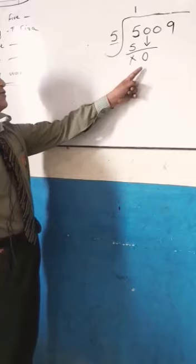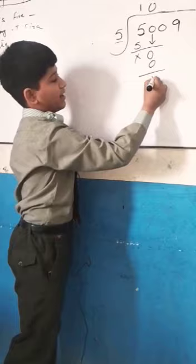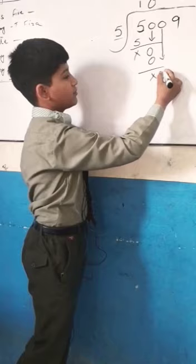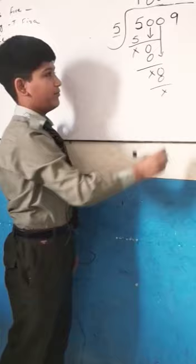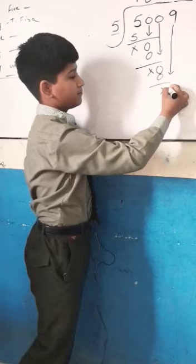Now, we have to select 5, 0 & 0. Now we have cut — nothing left. Now we have to get 0 to the top: 5, 0, 0. Now we have to get 9 to the top.